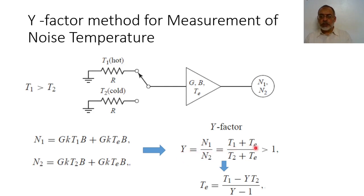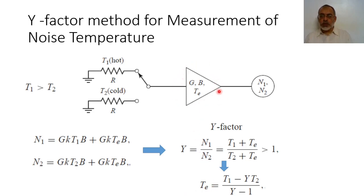The Y factor equals (T1 + Te) / (T2 + Te), which is greater than unity. By solving this equation in terms of Y, we can determine the value of the effective temperature Te. The result is: Te = (T1 − Y·T2) / (Y − 1). This is how to measure the effective or equivalent noise temperature of a circuit.